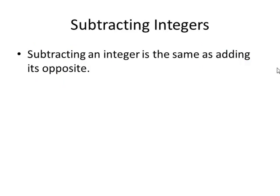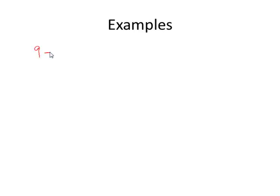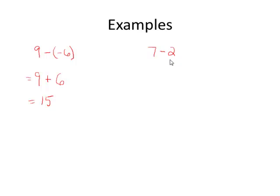Subtracting an integer is the same as adding its opposite. For example, let's say we had 9 minus negative 6. The opposite of negative 6 is positive 6, so 9 minus negative 6 is the same as 9 plus 6, which is 15. By the way, this idea also allows you to rewrite 7 minus 2 as 7 plus negative 2, though 7 minus 2 is a lot easier to handle. Either way, the answer is 5.